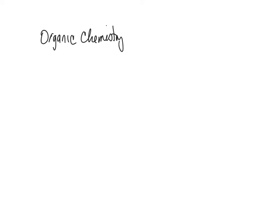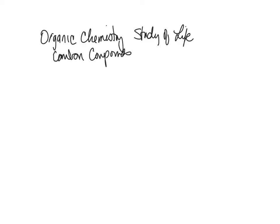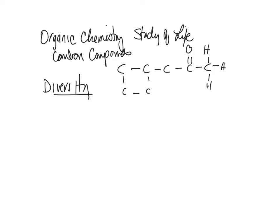Welcome to our first lesson of organic chemistry. Organic chemistry means the study of life — it is the chemistry of carbon compounds. Carbons form very strong bonds with other carbons, they can form rings, and they can form long chains. The diversity of life comes from these carbon compounds that form strong bonds. Carbon can also form covalent bonds with other elements, and because there are so many different ways carbons can join each other, you have a large number of organic molecules.